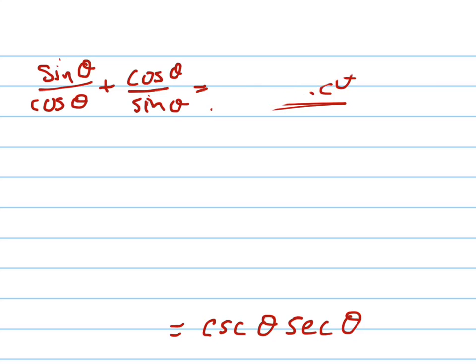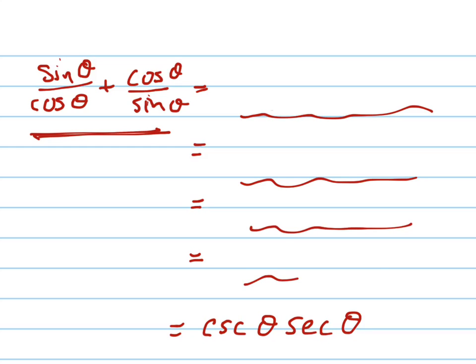But I like to do it this way because then I can see that I'm starting with this right here, the left side, and I'm changing it until I get down to this last answer. So I'm starting here, and I'm saying this equals whatever I write here, which equals whatever I write here, until I get down to the answer, and that proves that I've done it right.